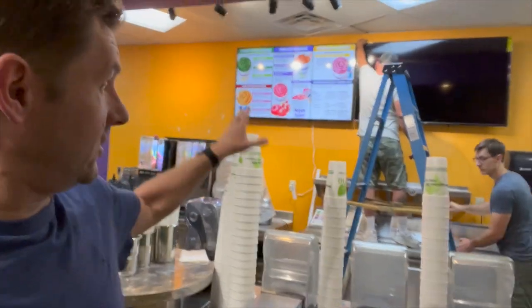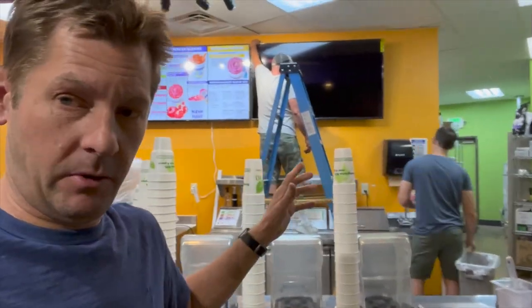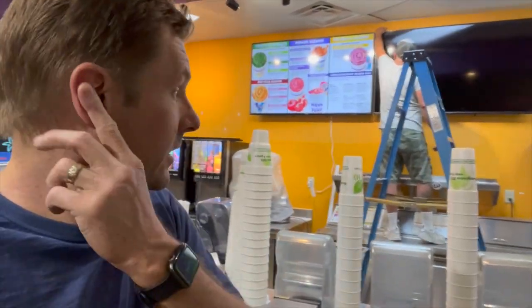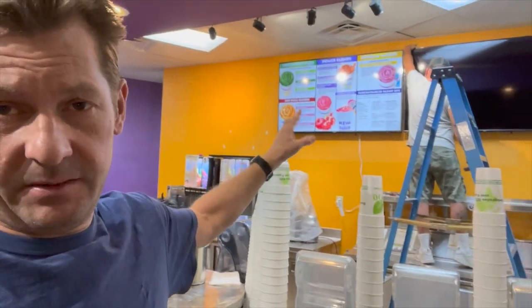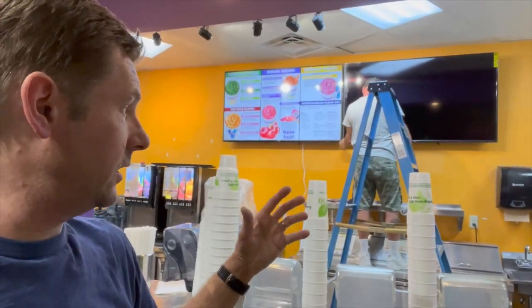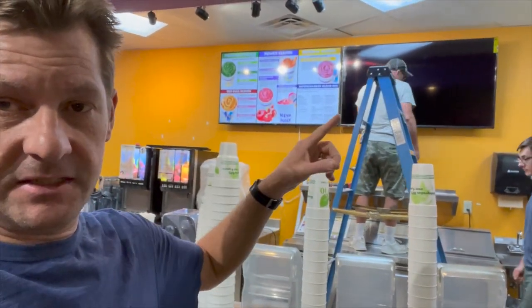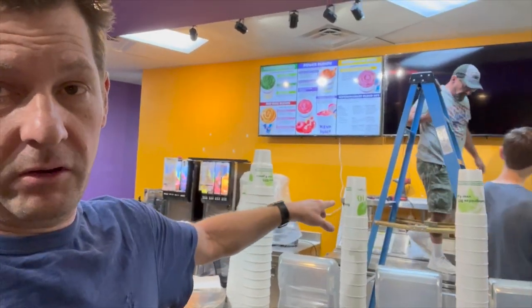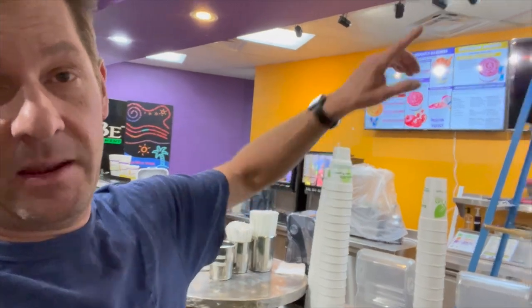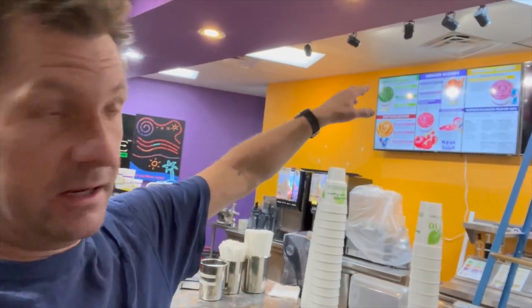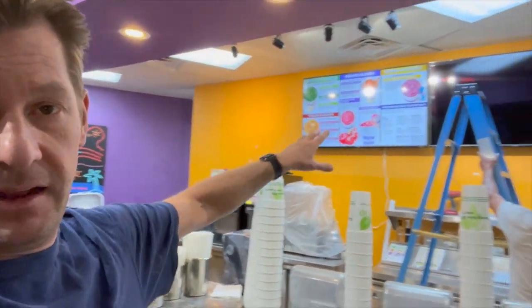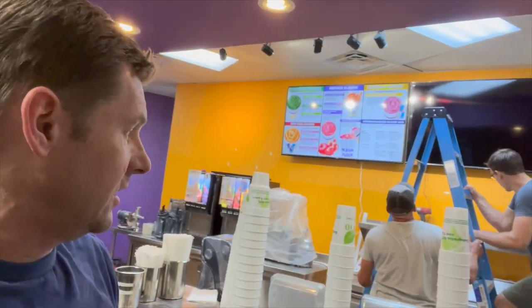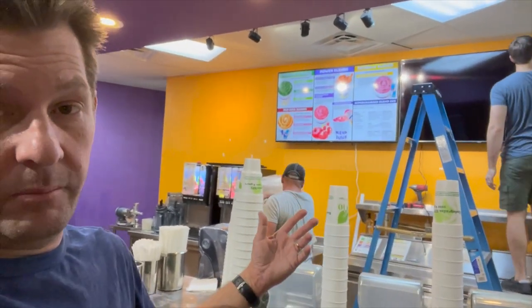All right team, so we are installing the digital monitors tonight. We're putting three up—we've already got the Radiant system on one. We're going to walk you through the process. The mounting and TV installation is pretty simple, and luckily in this store we have power. But we can add power by teeing off a junction box and adding outlets behind if you need to. These don't require much power, so pretty cool.